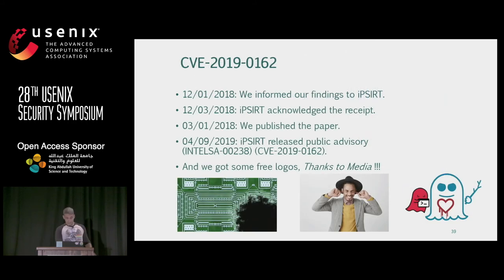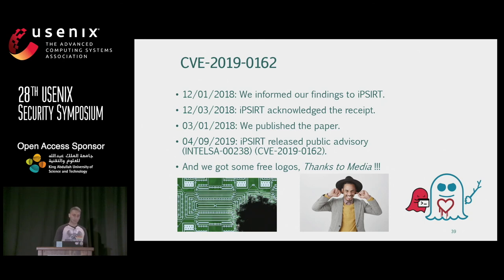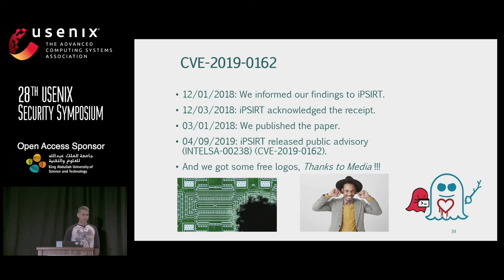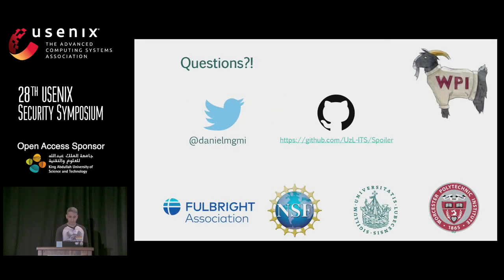The story of the responsible disclosure wasn't very coordinated. We disclosed the issue, contacted Intel, got some acknowledgment, but no action was performed. At some point we released the paper, and the CVE was assigned after we released the paper and after media picked up the issue. Thanks to media, we got some free logos — one looks like a burned CPU, another a heartbeat with a Spectre theme, but I like the one in the middle because at least it matches the name SPOILER.